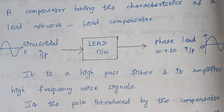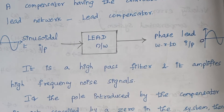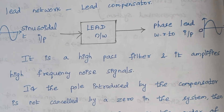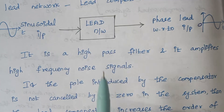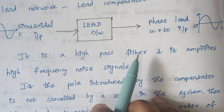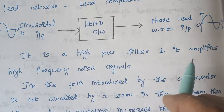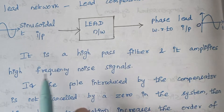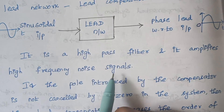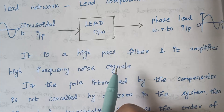Am I making the concept clear? Lead networks are generally identified as high-pass filters. A high-pass filter amplifies the high frequency noise signals — that is, it maximizes the high frequency noises.